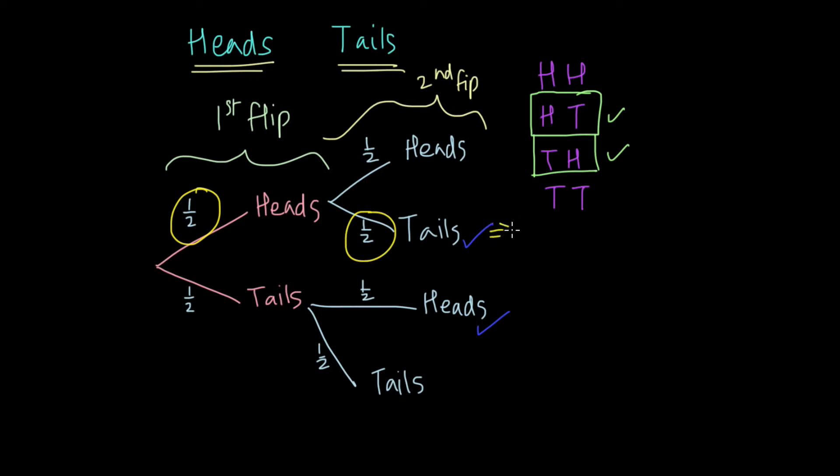So the probability of this event is a half times a half, which is a quarter. And the same thing for this event. First getting tails and then getting heads is a half times a half, which is a quarter.